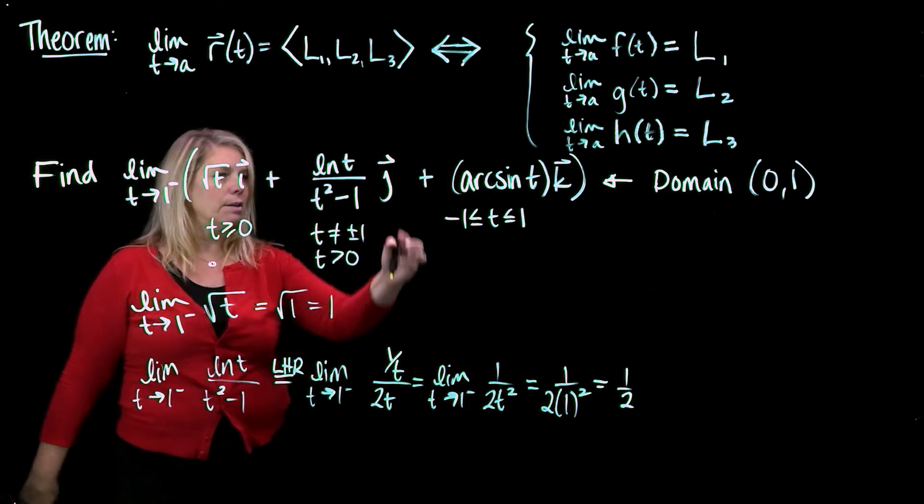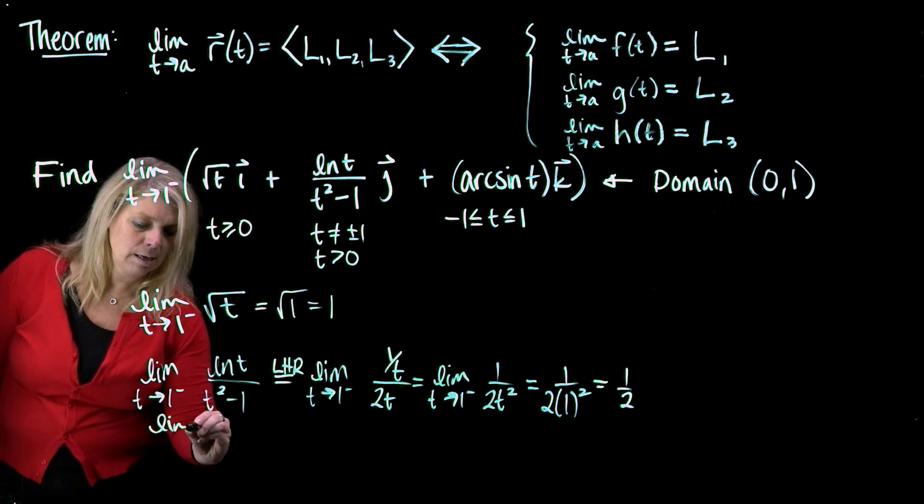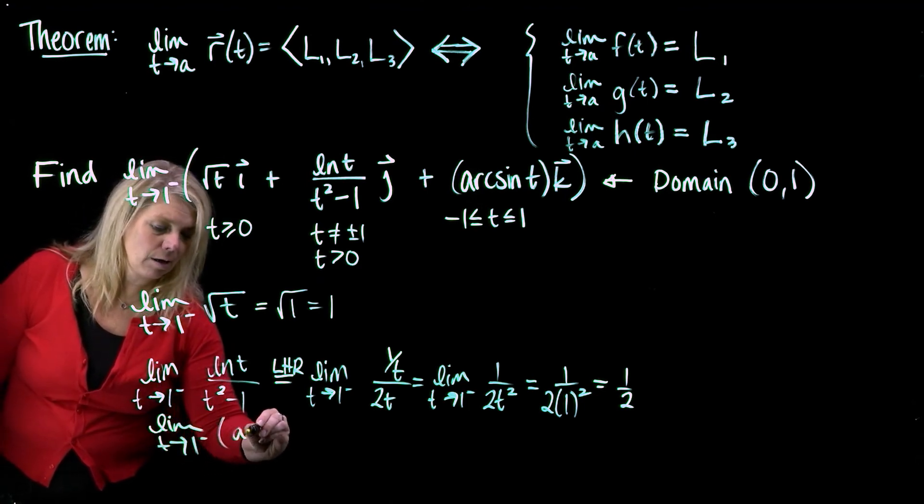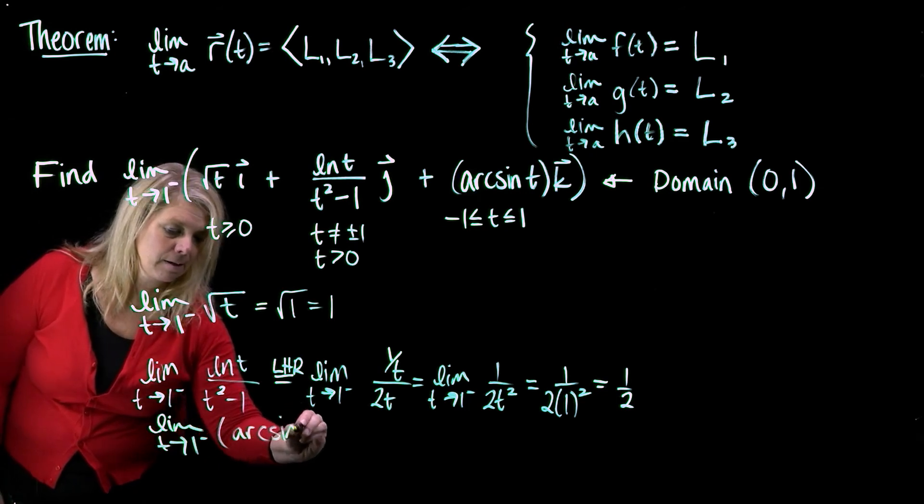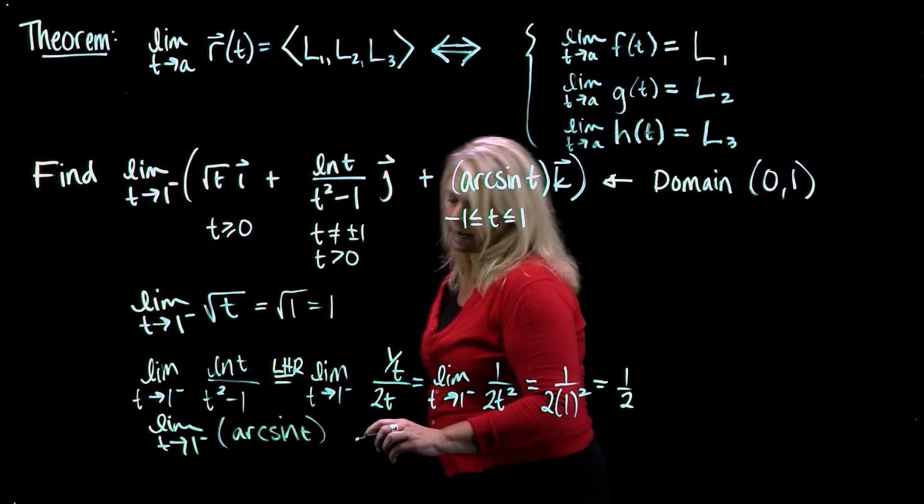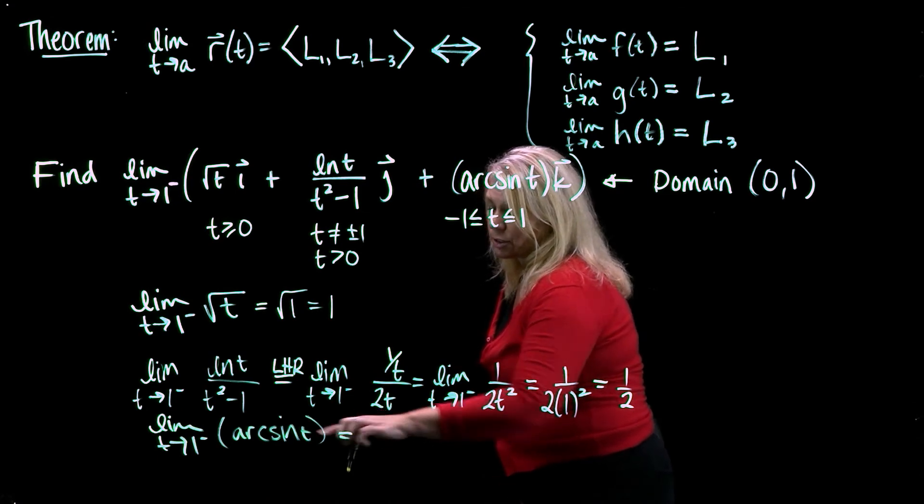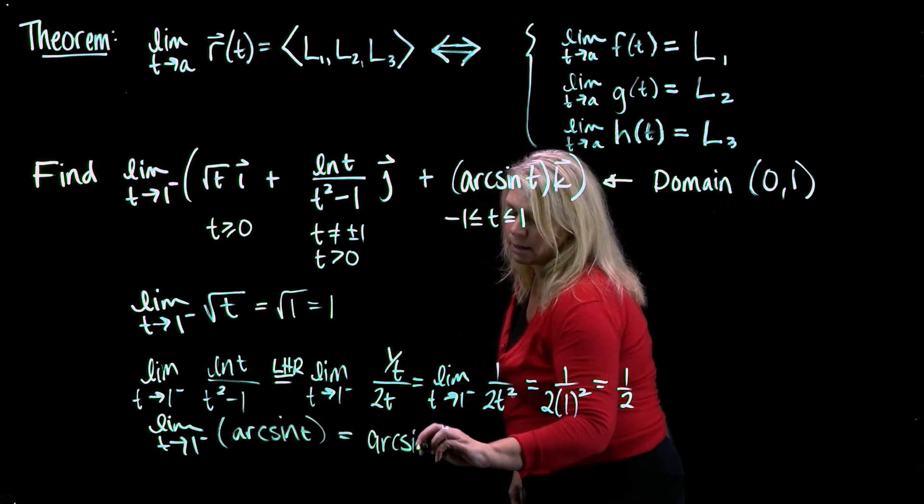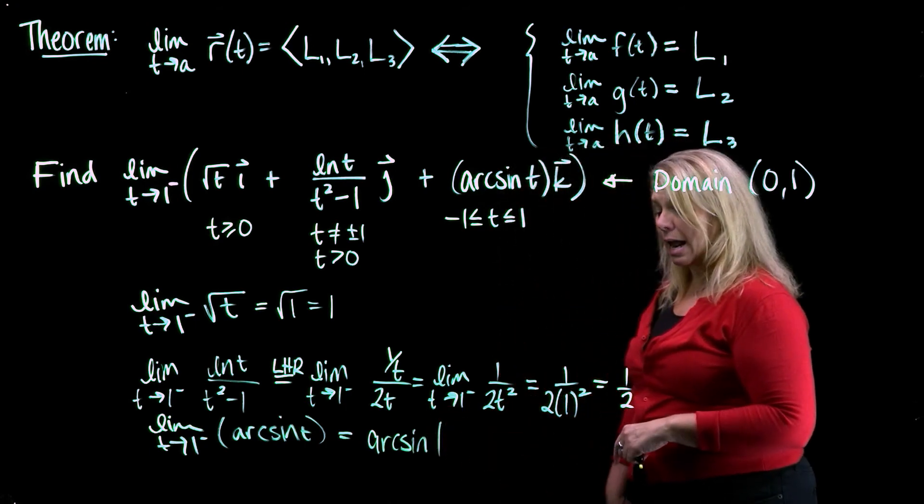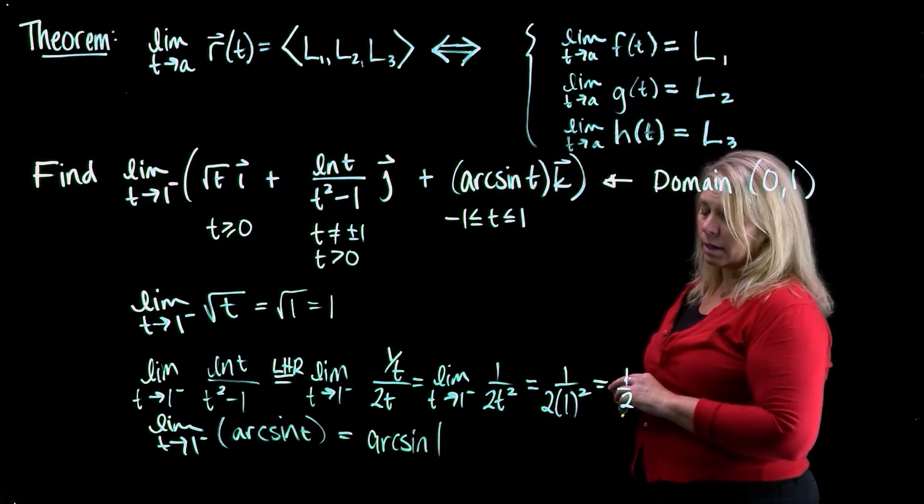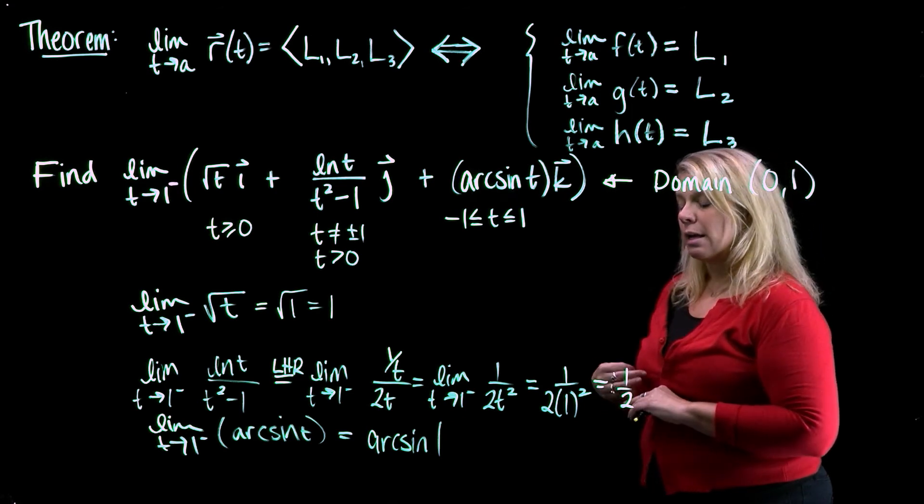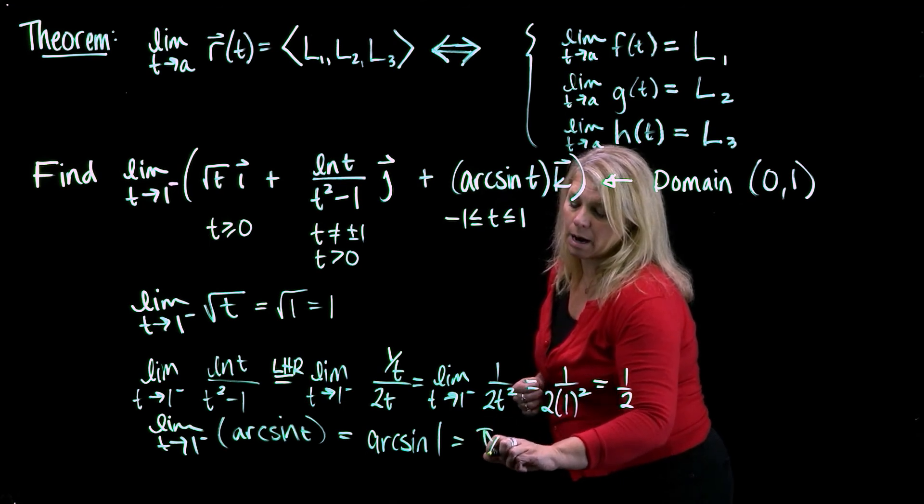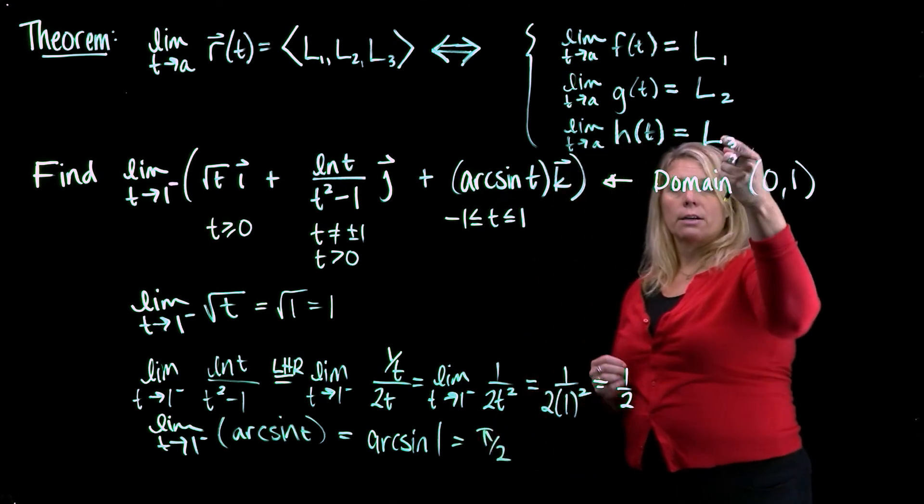And then I need to consider the limit of this last component function, the limit as t approaches 1 from the left of arc sine of t. And so we can actually use substitution on that one as well. So that's arc sine of 1. So that's asking us for the angle in the appropriate interval, negative pi over 2 to pi over 2, that has a sine value of 1. So that's pi over 2. All right, so that's our L3.